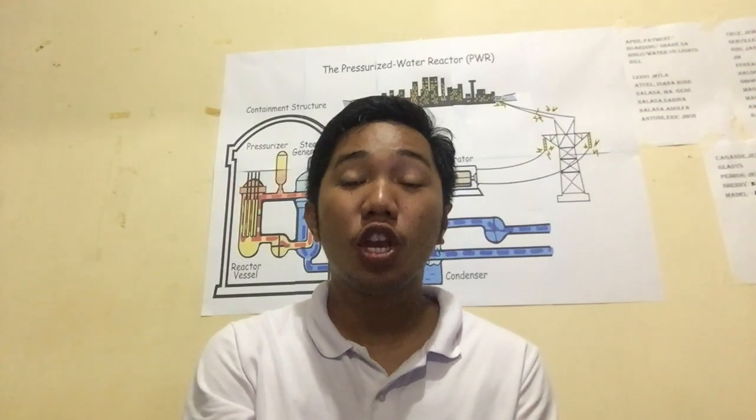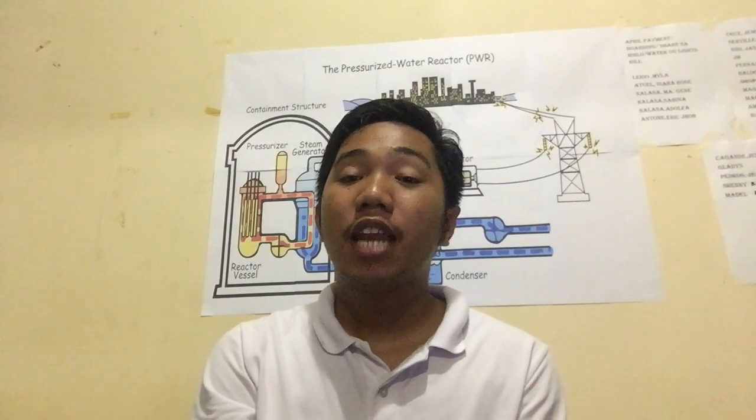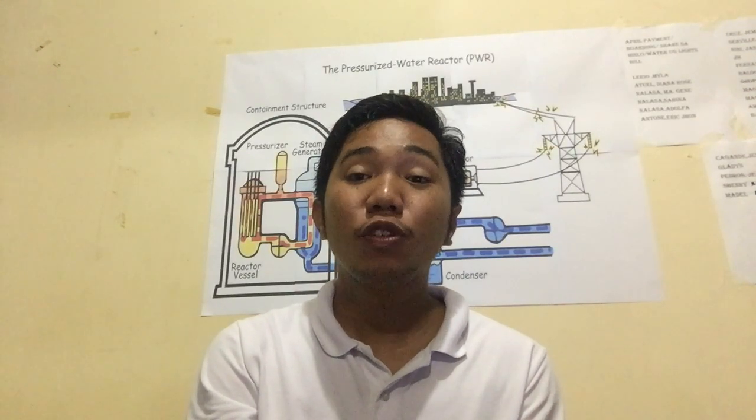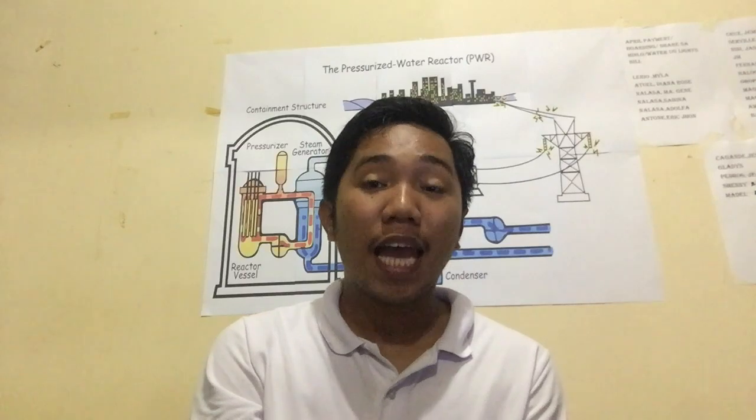The fuel rods are the heart of a nuclear reactor, containing pellets of enriched uranium or other fissile material. When a neutron strikes the nucleus of a uranium-235 atom, it can cause the nucleus to split, releasing energy and more neutrons. These neutrons can then collide with other uranium-235 nuclei, triggering additional fissions in a self-sustaining chain reaction.